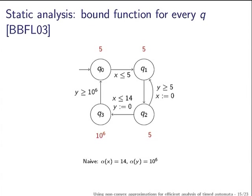There is a better way of associating constants. The constant 10^6 is relevant to y only in a particular state, but to reach that state you go through q2 where y is reset. So this constant 10^6 is hidden by the reset at q2 — you do not have to associate 10^6 to y even at q2. By associating different bound functions to different states of the automaton, called static analysis, you reduce the size of the zone graph by a good amount.